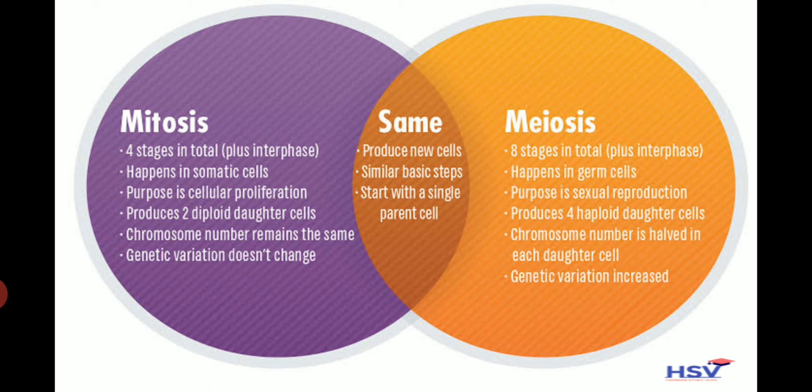So this is the difference between mitosis and meiosis. The similarities of mitosis and meiosis are: they both produce new cells, they both have similar basic steps, and they both start with a single parent cell.